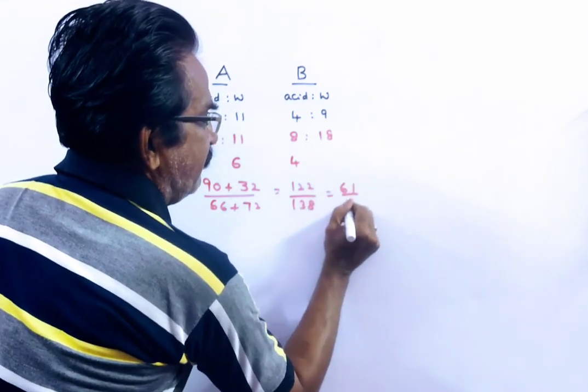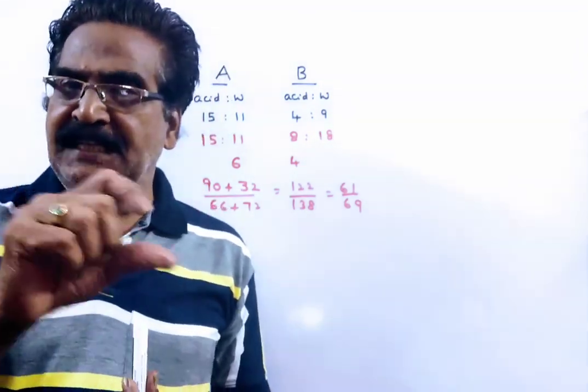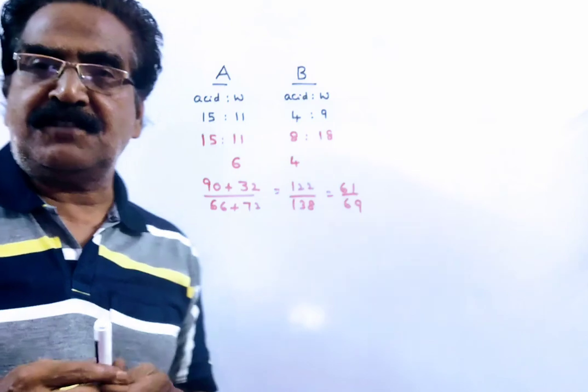That is 61 to 69. Friends, now the ratio of acid and water in the resultant mixture is 61 to 69.